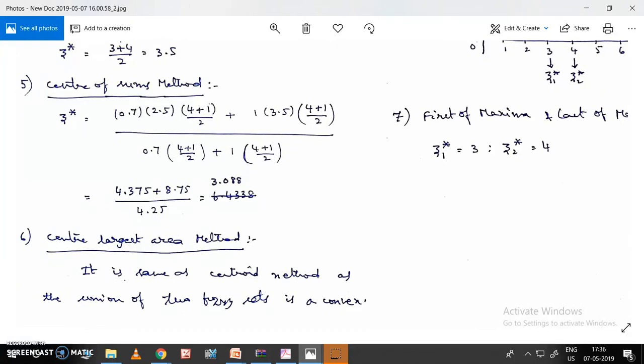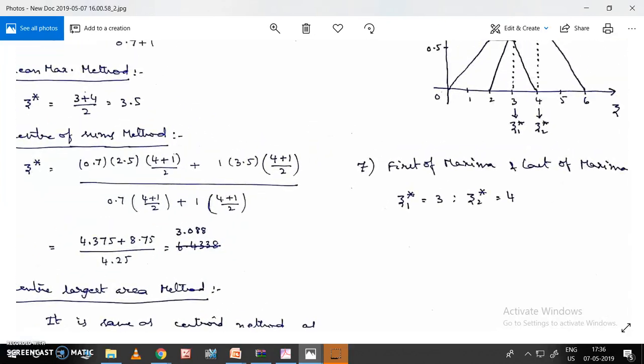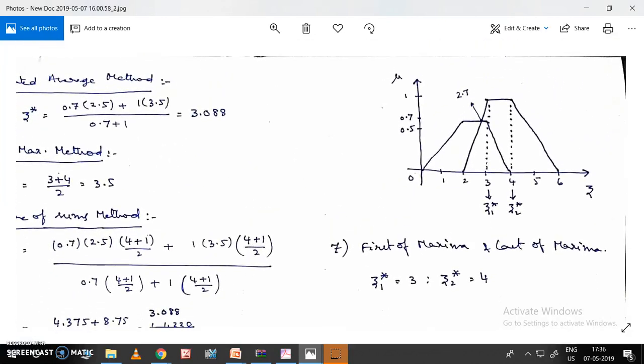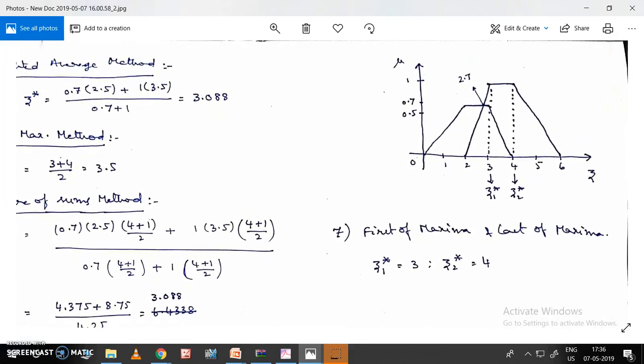Next is center of larger area method. This method is exactly the same as centroid method only, because the union of two fuzzy sets is a convex set.